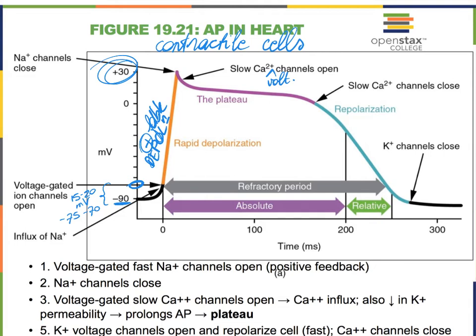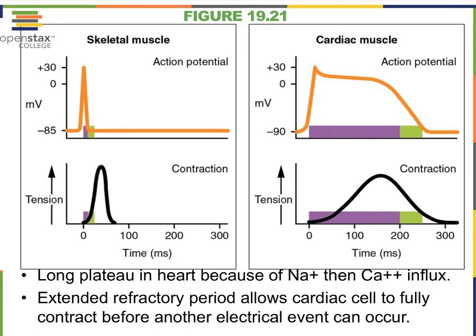Another major difference in cardiac contractile cells is that they actually begin to contract already during the plateau. In skeletal muscle, the action potential had to completely finish before contraction could occur. Here, soon after the calcium channels have begun to open, the physical contraction of the heart can already begin.